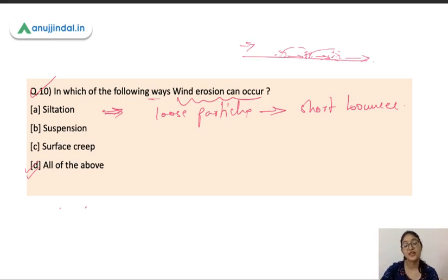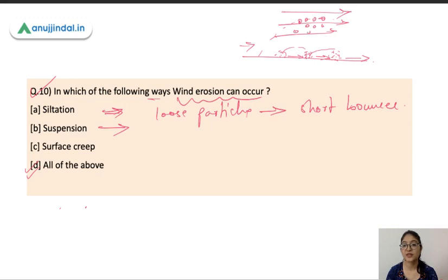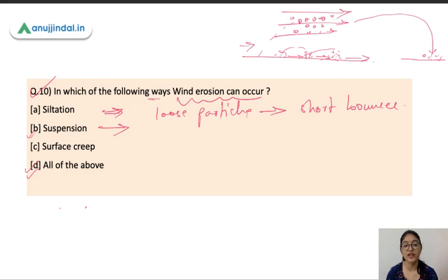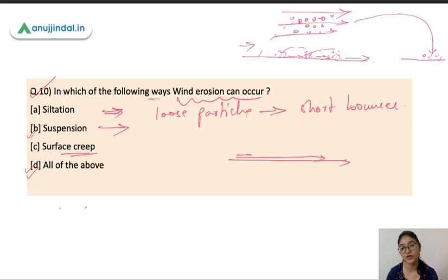In suspension, loose particles are suspended in the wind and then deposited at a very long distance — for example, 50 to 60 km away. In surface creep, loose soil particles are blown by the wind along the surface of the earth, rolling or sliding near the ground. So wind erosion can occur through saltation, suspension, or surface creep — all of these are correct.